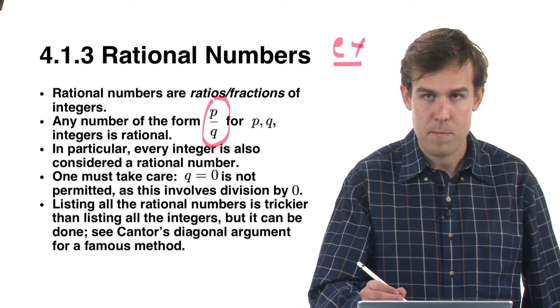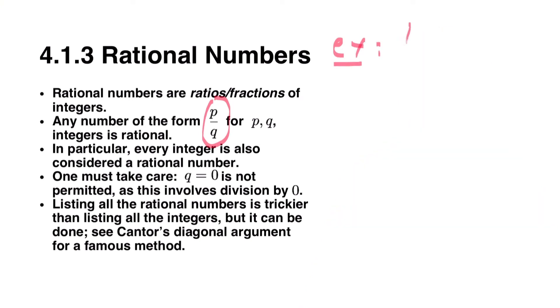For example, one half is of the form p over q, and one half is a rational number. Negative 81 over 17 is also a rational number.